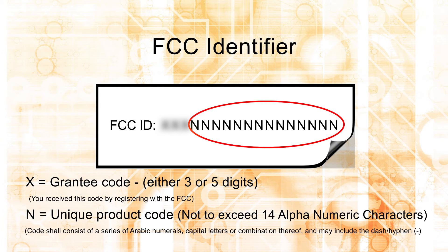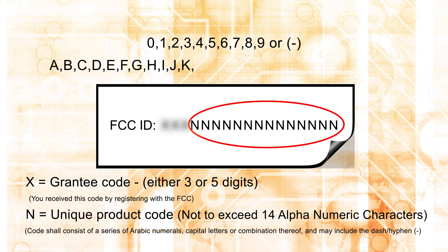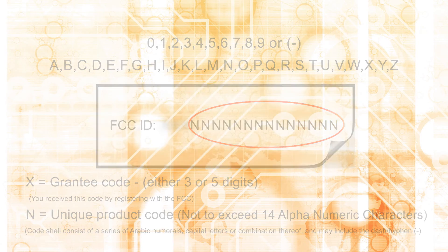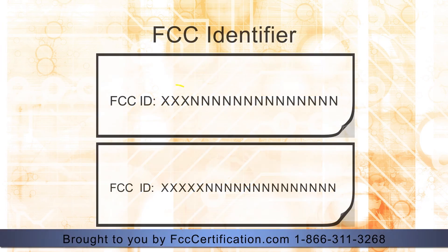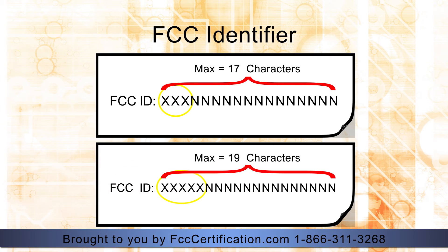The unique equipment product code assigned by the grantee shall consist of a series of Arabic numerals, capital letters, or a combination thereof, and may include the dash or hyphen. The maximum number of Arabic numerals, capital letters, and dashes or hyphens for the unique product code shall not exceed 14 total characters. Therefore, if you have a three-digit grantee code, the maximum number of characters is 17, and if you have a five-digit grantee code, the maximum number of characters is 19.